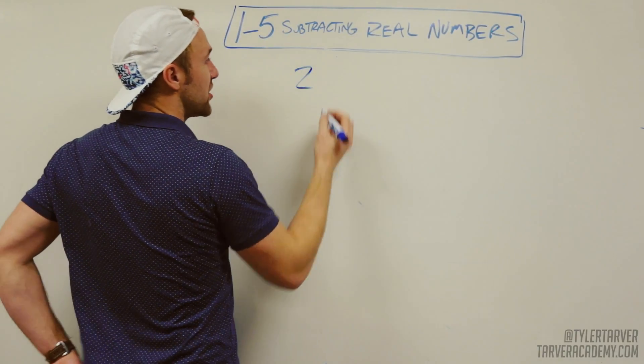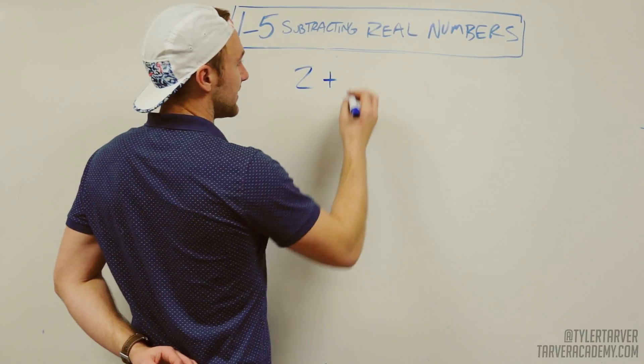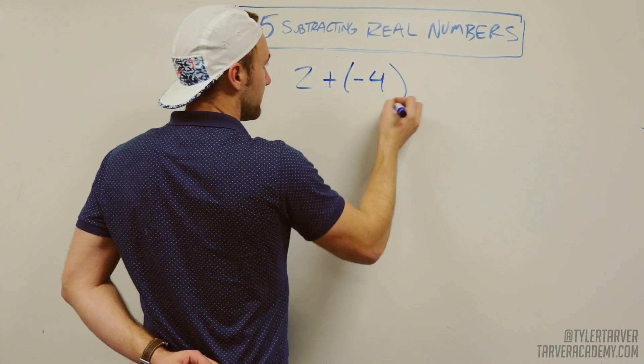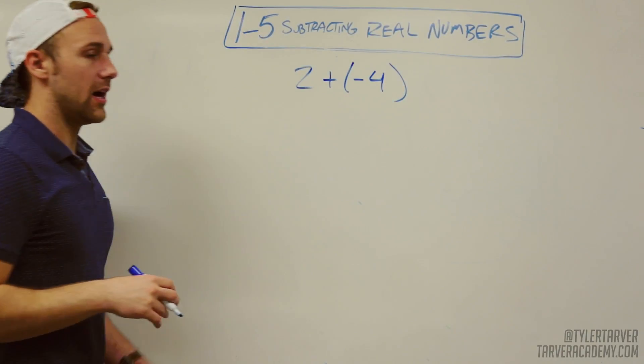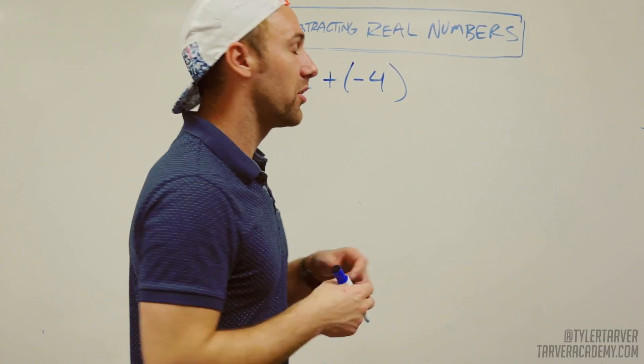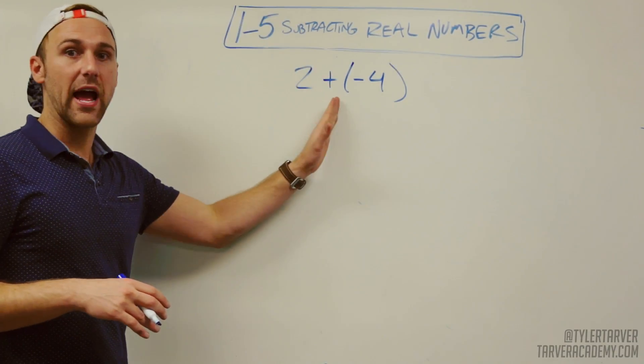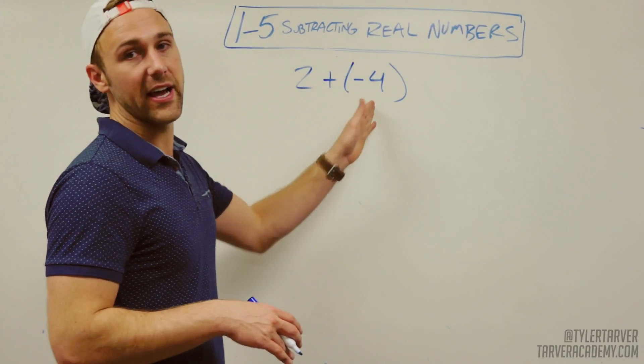You've got 2 plus negative 4. If you've seen my other lessons, we talked about adding real numbers. Here, this is addition because we're adding. It's still considered addition, but you have a negative 4.